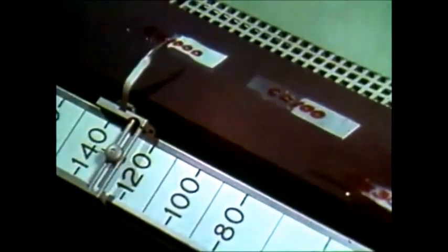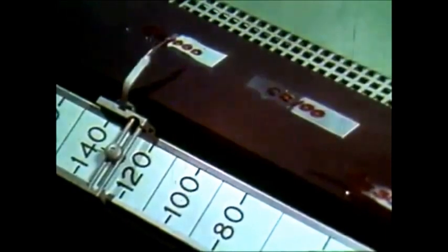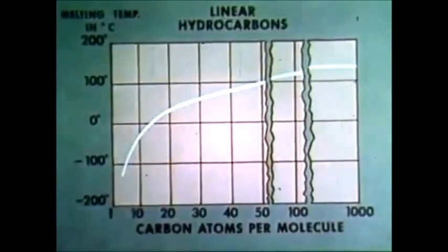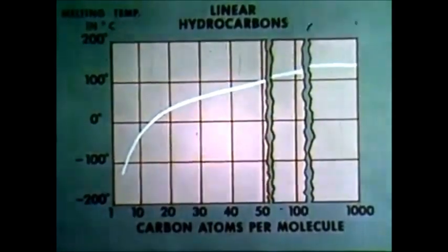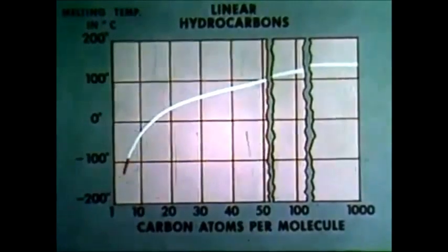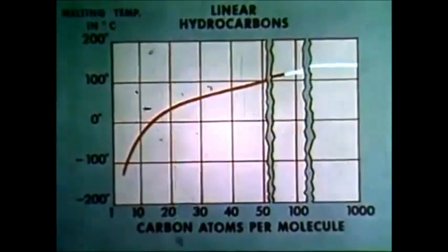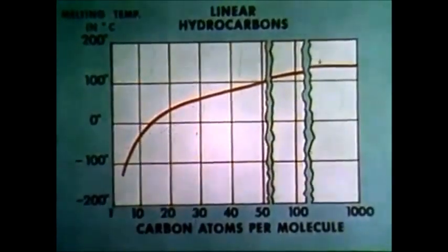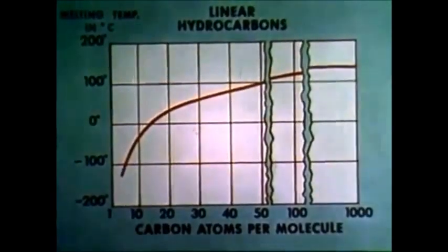Here, the melting point is above 130 degrees centigrade, somewhat higher than the previous sample, but this molecule is 10 times larger. Melting points do not increase in direct proportion with size. This curve for non-polar molecules shows the relationship between the melting point and the average number of carbon atoms in the chain. Melting points rise quite rapidly up to about 80 carbon atoms, more slowly above 100 carbon atoms, and finally reach a limit when molecules contain several hundred carbon atoms. For non-polar linear molecules, the limit is close to 140 degrees centigrade.